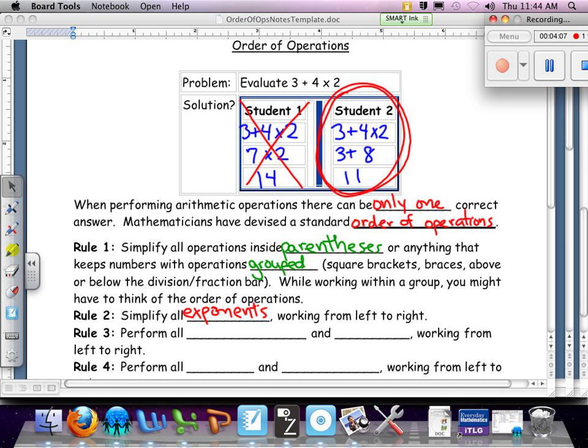The next priority level is to perform all multiplication and division working from left to right. Now this is where that PEMDAS, or Please Excuse My Dear Aunt Sally, gets people confused because they think it always has to be multiplication then division, but that's not always the case. If you're looking at it and you're at that priority level and division appears first, you have to do the division. Now if you have multiplication and division in the same expression and they don't interact with each other, you could do them both at the same time.